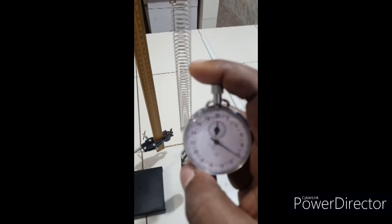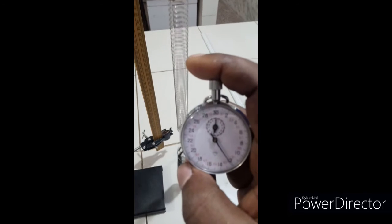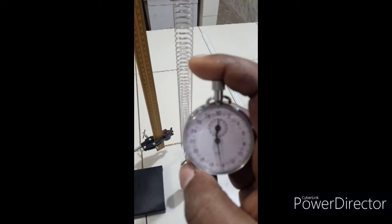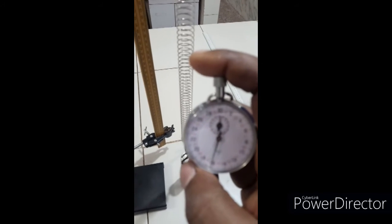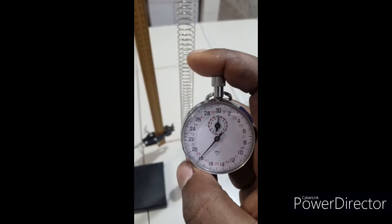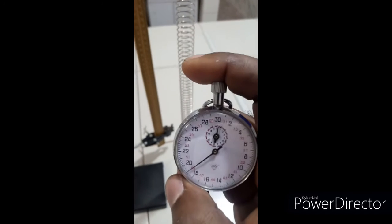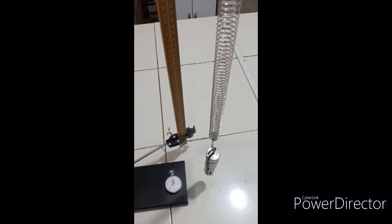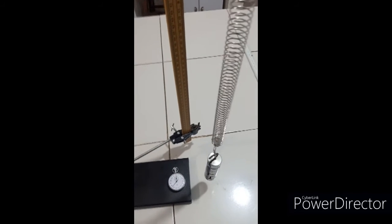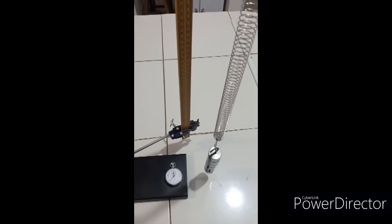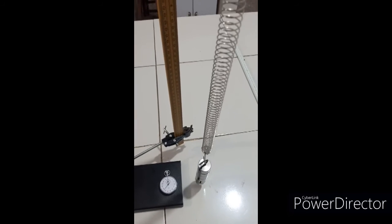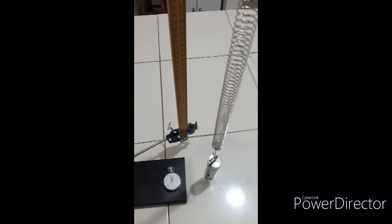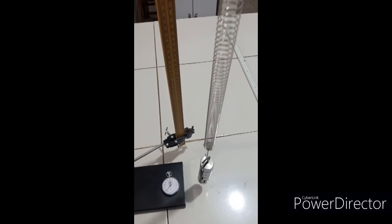So here's my time, exactly 19.1 seconds. So I'm going to quickly tabulate my readings and show you, and then plot the graph. And then I'll show you the theory for the experiment, and then at the end I will deduce the value of g and I will show you.